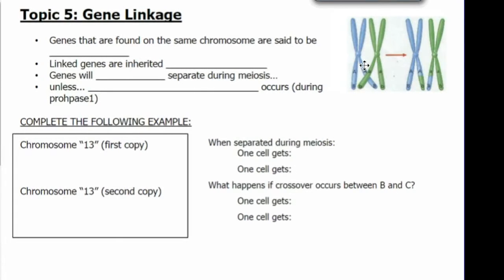Today we're going to talk about gene linkage. Genes that are on the same chromosome are said to be linked. Linked genes are inherited together. Genes will not separate during meiosis unless crossing over occurs.